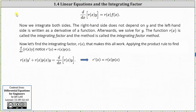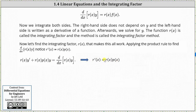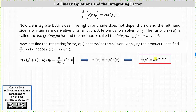Now let's find the integrating factor r of x that makes all this work. Applying the product rule to the derivative of r of x times y, it is important to notice that r prime must be equal to r of x times p of x. We'll use this differential equation r prime of x equals r of x times p of x to derive the integrating factor, and we'll find that r of x equals e to the power of the integral of p of x dx.